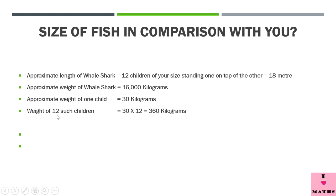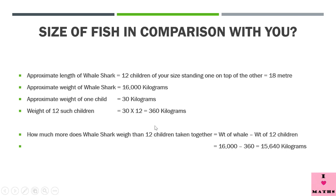So 12 of your friends together weigh 360 kilograms. Now let us compare that with the weight of the whale shark by subtracting: 16,000 minus 360 = 15,640 kilograms. That is how much heavier a whale shark is compared to 12 children taken together.